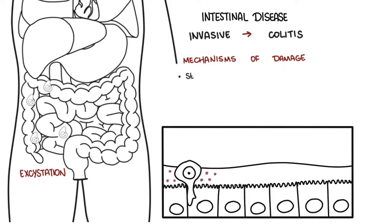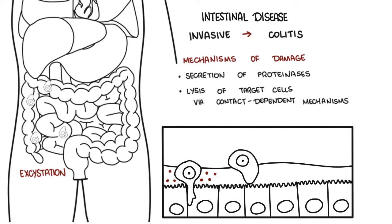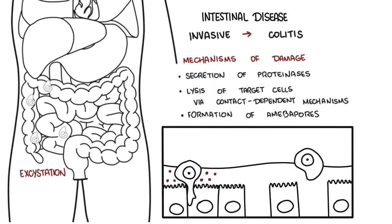For example, they can secrete things such as proteinases. They cause lysis of target cells via a contact-dependent mechanism. They induce apoptosis, programmed cell death. They also form what's called amoeba pores, resulting in cytolysis of the infected intestinal cell.